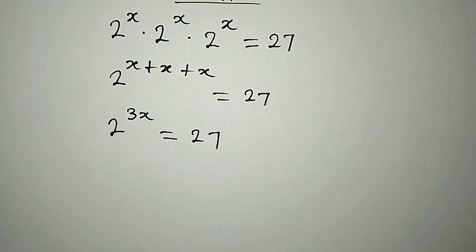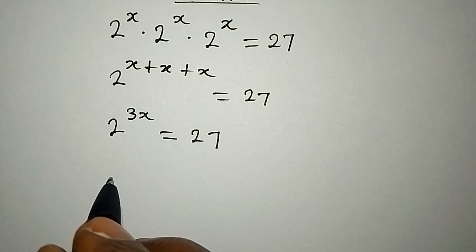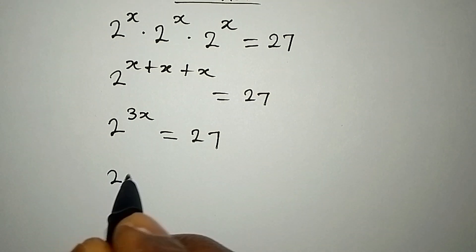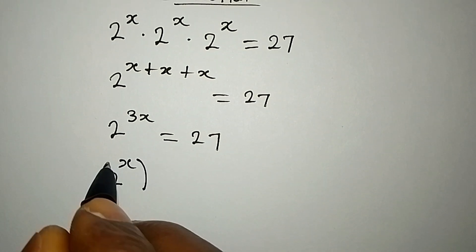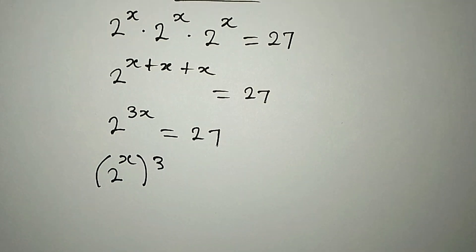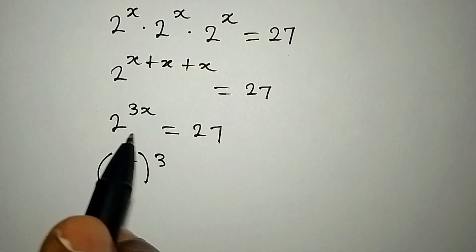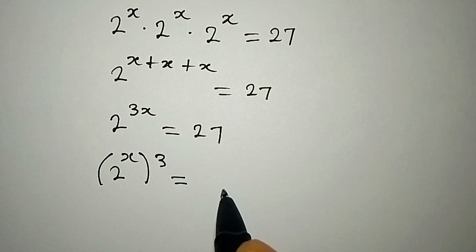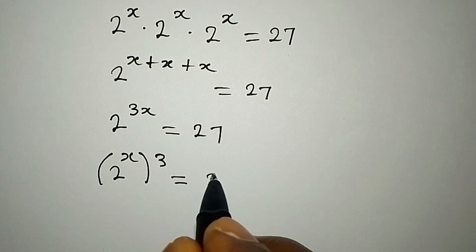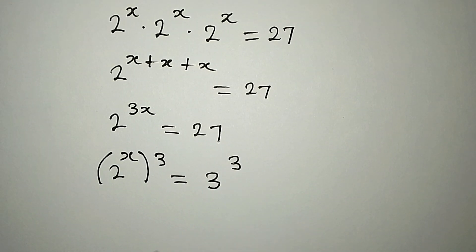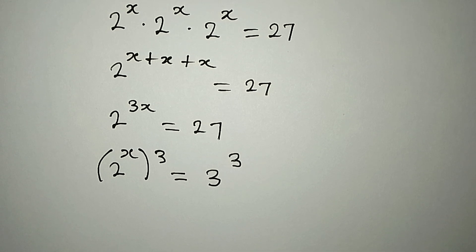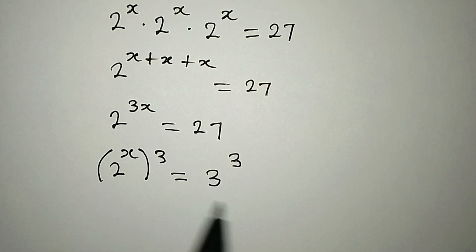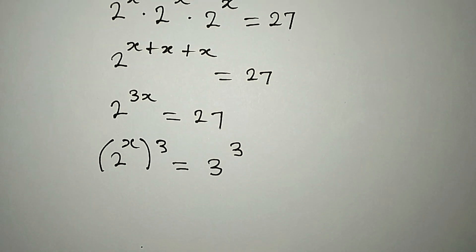From here, remember that this is the same thing as 2 to the power of x to the power of 3, because we can always multiply the powers. And this will now be equal to 27, which is also 3 to the power of 3. Now we have the same power of 3, but the bases are not the same, and we want to solve this in detail.